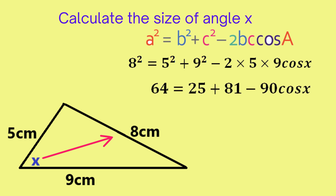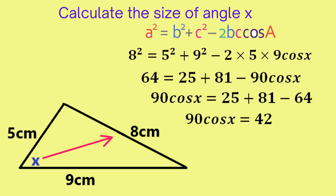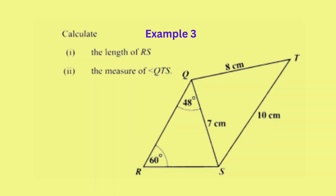Eight squared is 64, five squared is 25, and nine squared is 81. Two times five times nine is 90, so we have minus 90 cosine x. We transpose to find cosine x, grouping it on the left to get 90 cos x equals 42. Dividing both sides by 90 gives cos x equals 0.467. To get x we press shift, then cosine, then 0.467, giving x equals 62.2 degrees.